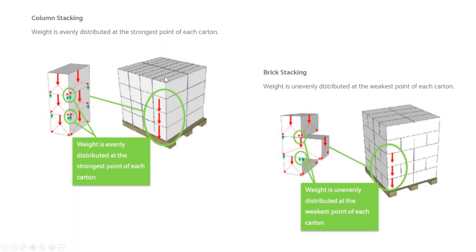But the column stack, this one is very easy for the carton to fall on the floor. So column stacking is good for strength, but brick stacking is safe. Normally, sometimes we use column stacking, sometimes brick stacking, and sometimes we combine the two.